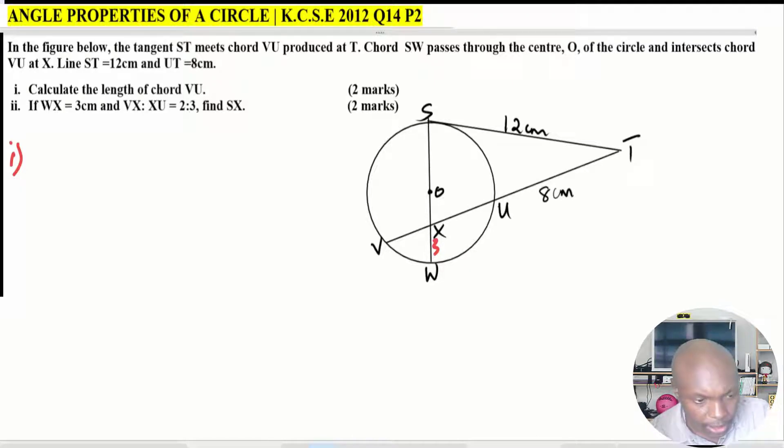When you look at ST, ST is a tangent and VT is a secant, so automatically you're going to use this property, the tangent-secant property.